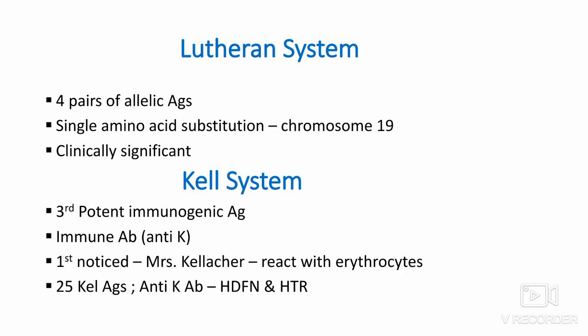Kell system: This is the third most potent immunogenic antigen, defined by an immune antibody, anti-K. It was first noticed in the serum of Mrs. Kellacher, who reacted to the erythrocytes of her newborn infant, resulting in hemolytic reactions. Till now, 25 Kell antigens have been discovered. Anti-K antibody causes very severe hemolytic disease to the fetus and newborn, known as HDFN, and also hemolytic transfusion reactions, known as HTR.